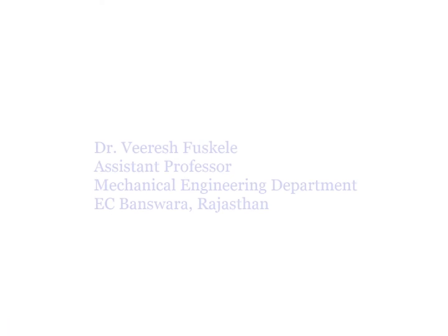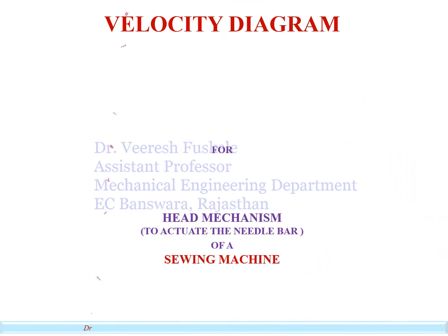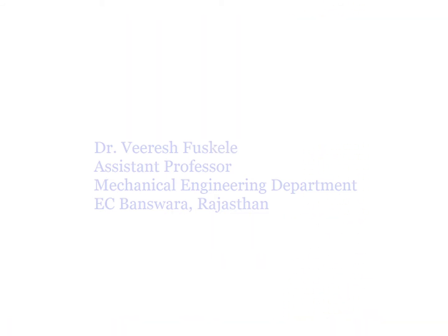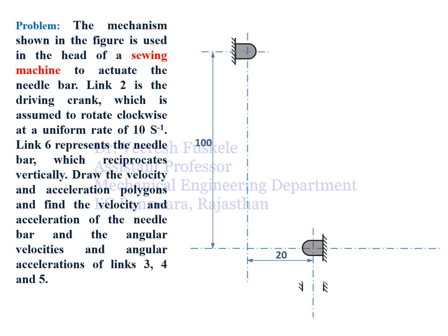For this, using an example of a sewing machine head mechanism which is actually responsible to actuate the needle bar. The problem statement is: the mechanism shown in the figure is used in the head of a sewing machine to actuate the needle bar. Link 2 is the driving crank which is assumed to rotate clockwise at a uniform rate of 10 radians per second.